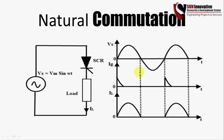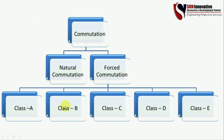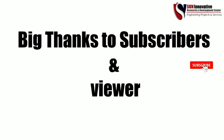That is why it is called natural commutation. Now we need to discuss all five classifications A, B, C, D, and E of forced commutation. These are divided into a five-part series. In this video I will discuss Class A commutation, and in the next videos I will cover B, C, D, and E. We will also do a MATLAB simulation as usual. Thank you to all subscribers for your support.